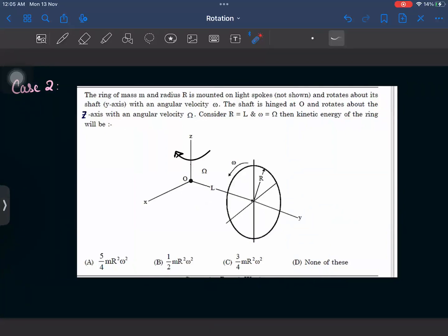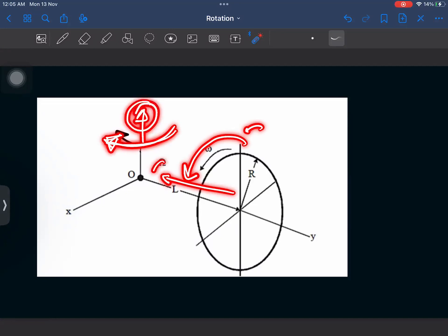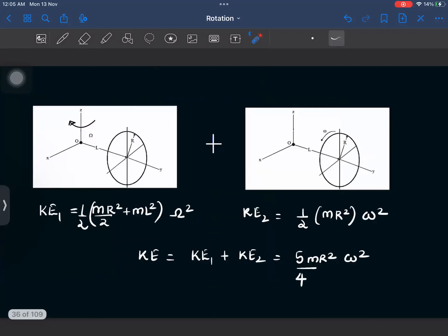Now dear students, this particular question, we can understand the situation that there are two spins that are happening. One is this spin and one is this spin. The direction of this spin is in this direction and the direction of this spin angular velocity in this direction. So you can see that this and this are perpendicular to each other and can be considered to be separate. So I have redrawn them again. So in this case, I have not drawn this particular spin here. And in this case, I have not drawn this spin here.